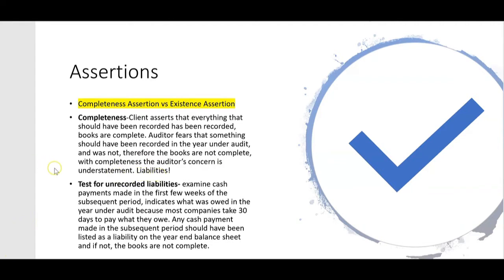Then I'll ask my new student: what's the test for unrecorded liabilities? What the CPA exam is looking for is that the auditor examines cash payments made by the client in the first few weeks of the subsequent period. So what did the client pay in January? This tests for unrecorded liabilities because most companies take 30 days to pay what they owe, so any cash payment made in early January should have been listed as a liability on the year-end balance sheet. If it wasn't, the books are not complete.